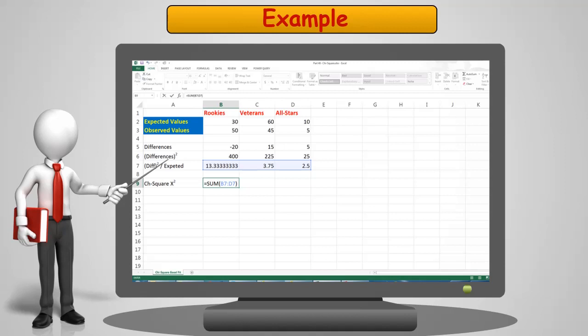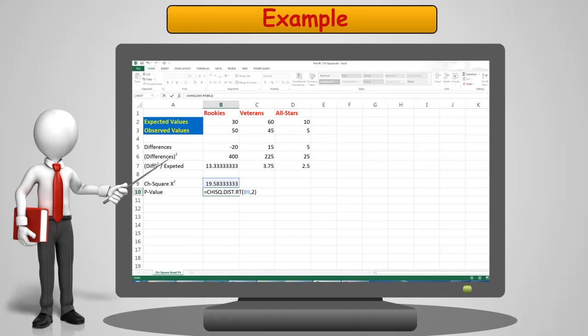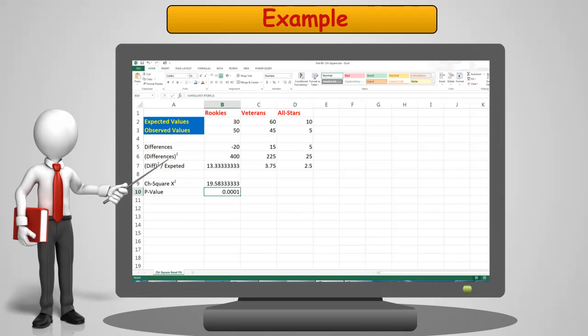Next, I'll divide that result of the difference squared divided by the expected value. Finally, I can sum those three values for the rookies, veterans, and all-stars to come up with my chi-square solution. For ease of use, I use the built-in function in Excel for a chi-square distribution lookup so I can return the p-value from that value of ratio.